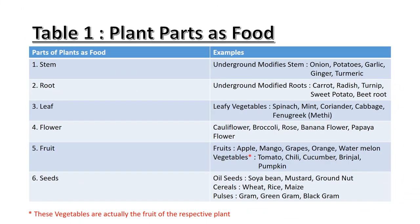Here we have table number 1, in which we have listed down the different parts of a plant which we eat and examples of each plant. The first part is stem. We have a general notion that stem is the part which is present above the ground. However, we have some underground modified stems like onion, potatoes, garlic, ginger, and turmeric.